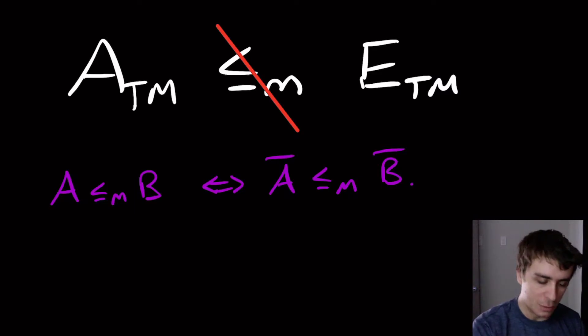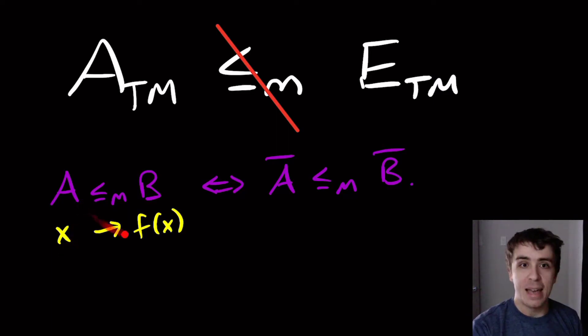And the reason for that is for mapping reductions, the function that takes some input x over here is going to produce some f of x over here. And x is in A if and only if f of x is in B.